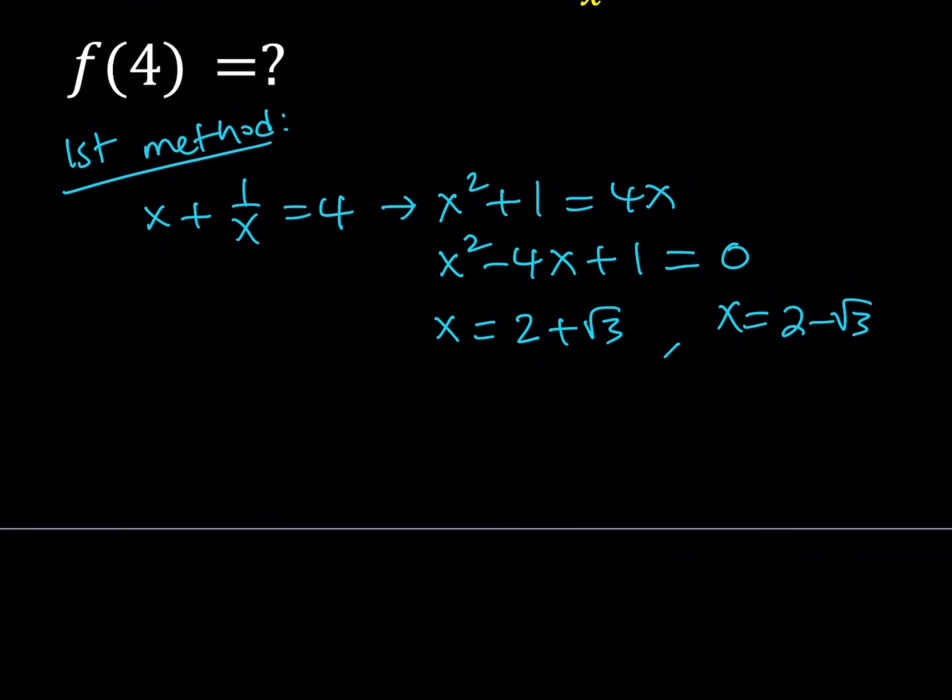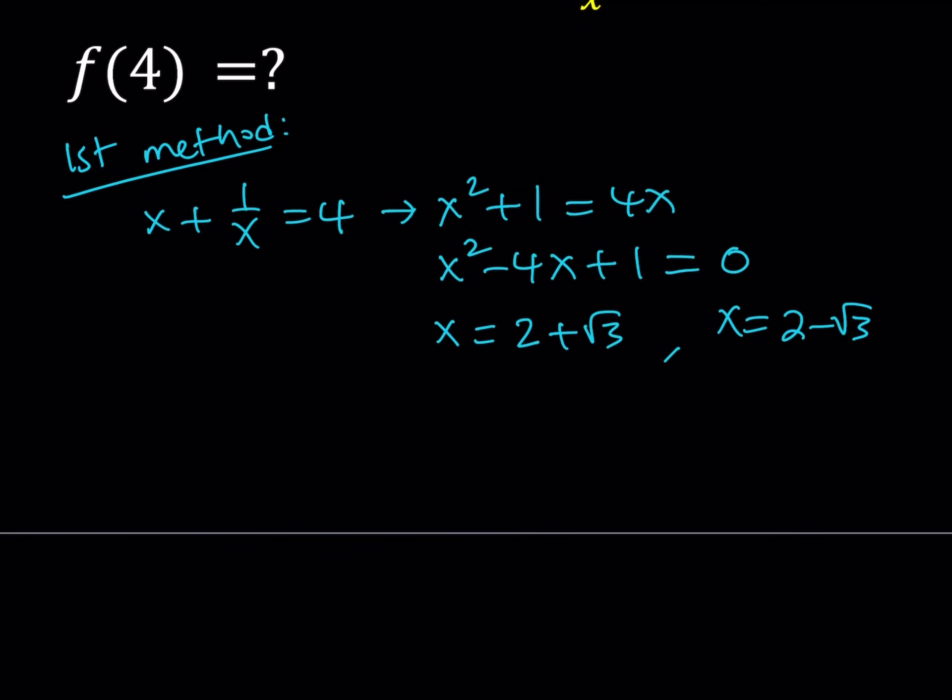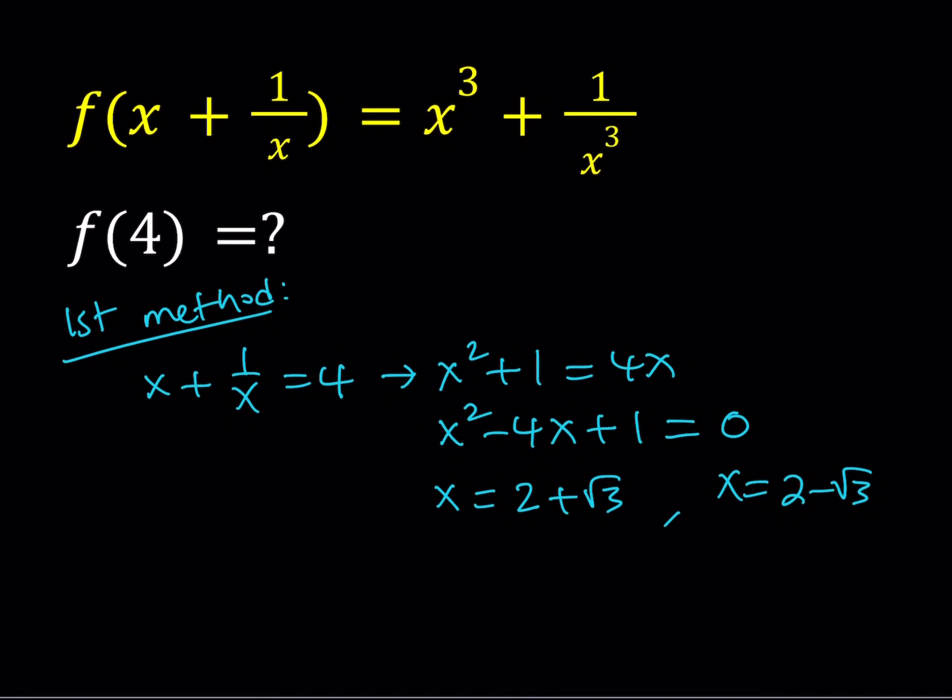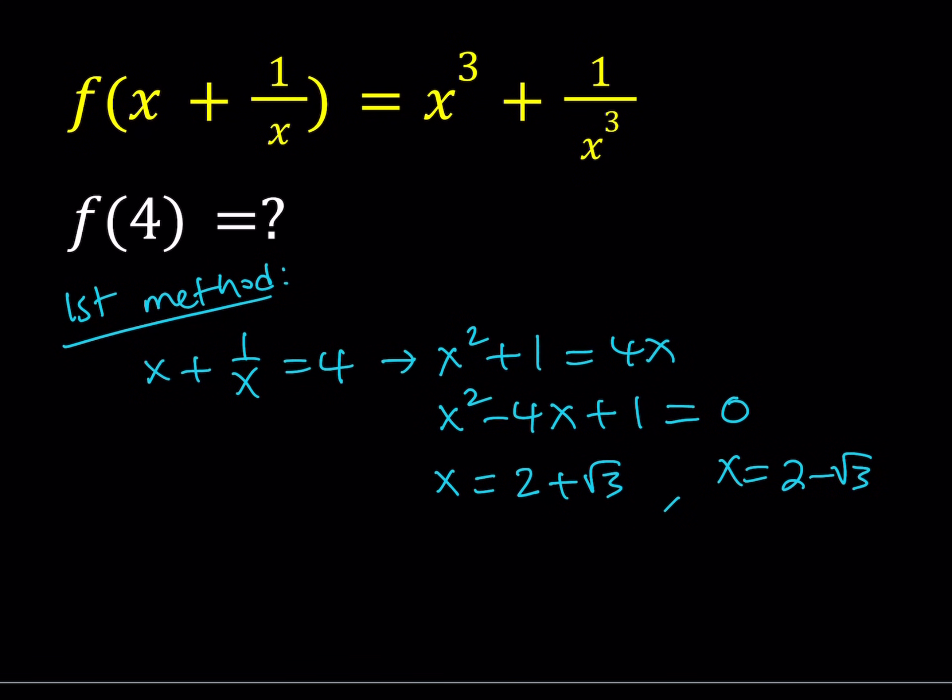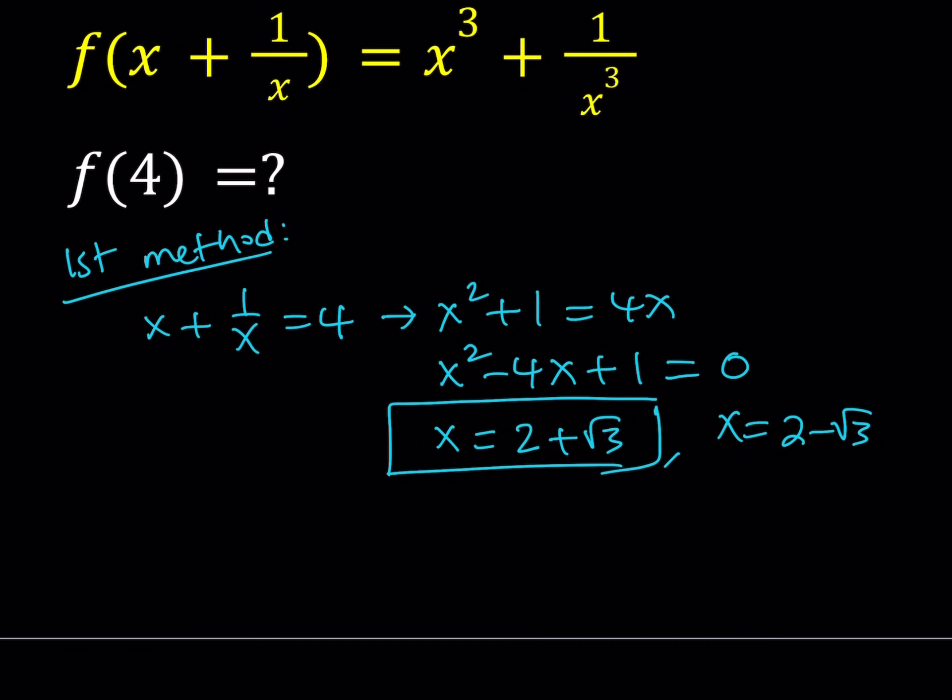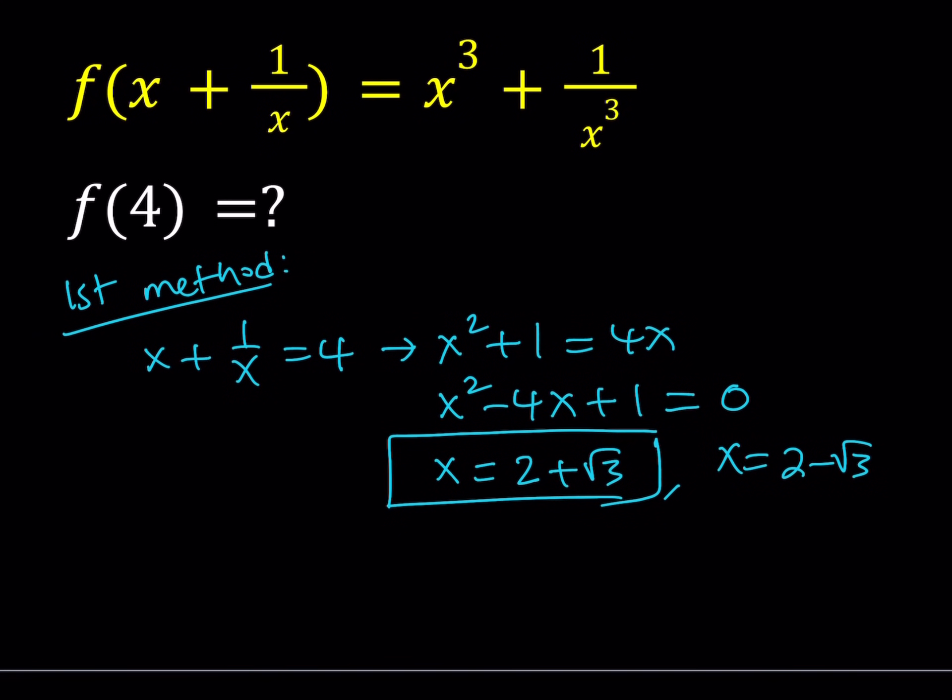Great, now which x value are we going to use? And the answer is it doesn't matter. Why? You'll see in a little bit. Now if I just use the positive value, since the answer is not going to matter and you can check it for yourself, I'm going to use the positive one - I mean the one that has the plus sign. They're both positive, but 2 plus root 3 looks more positive to me. So let's go ahead and substitute that.